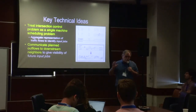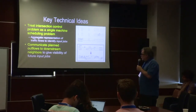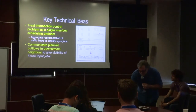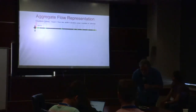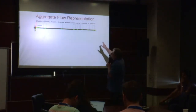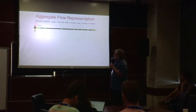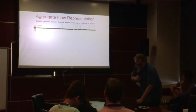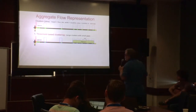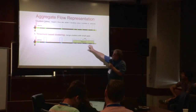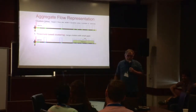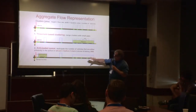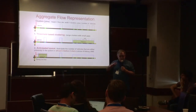The two key technical ideas: first, treat the intersection control problem as a single machine scheduling problem. The intersection is a machine; vehicles moving through are the jobs it has to service; there's changeover time when switching phases. We use an aggregate representation — grouping vehicles into clusters based on proximity — which allows us to solve the problem efficiently. We solve the abstract problem exactly, and that gives us our plan. The second key idea is communicating planned outflows to downstream neighbors to give visibility of future input.